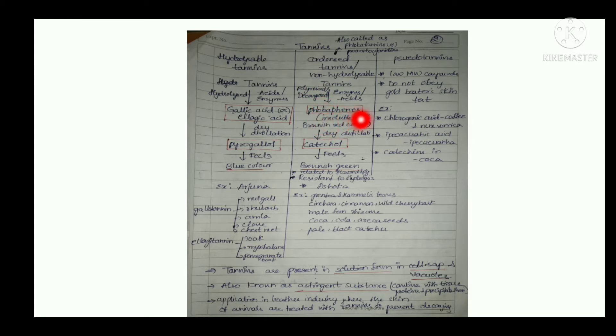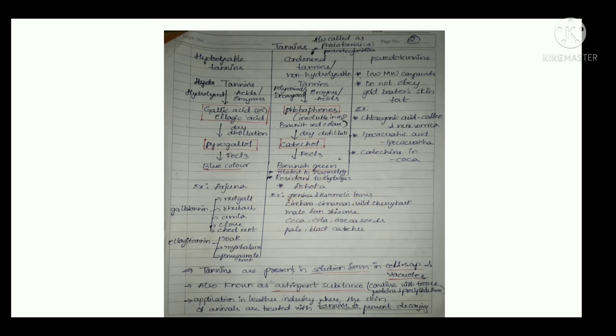On dry distillation they give catechol, and when this catechol is treated with FeCl3 it shows brownish green color. Just remember these final products: in hydrolyzable there is gallic acid, ellagic acid, and pyrogallol giving blue color; in condensed, phlobatannins, catechol, and brownish green color. These are the examples. Here it is Ashoka, whereas here it is Arjuna.